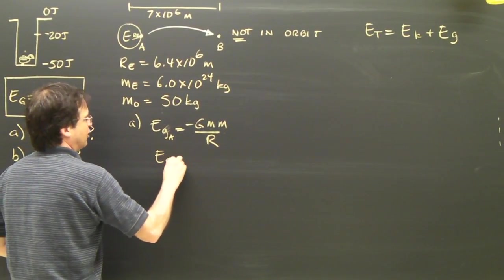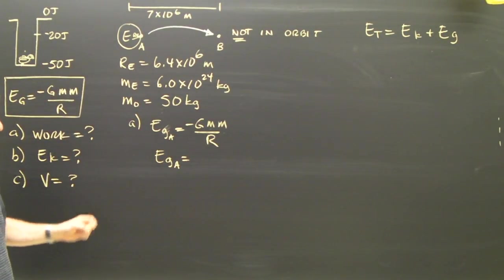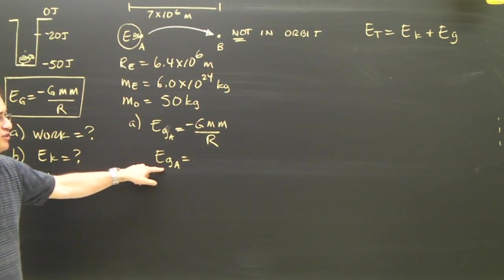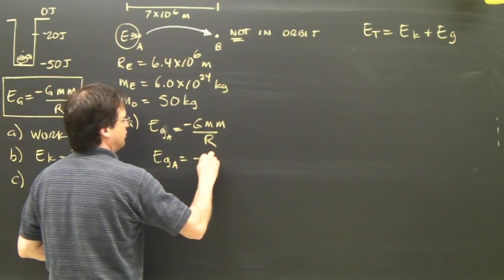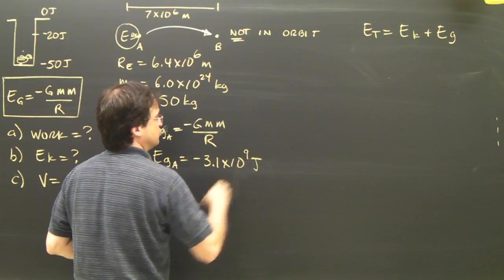If you plug into that, you're going to have to do it several times because frequently it doesn't work quite well in your calculator. But if you find the gravitational energy at A, it's going to be 3.1 times 10 to the 9 joules.